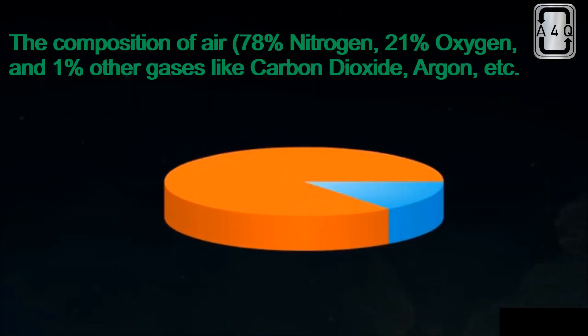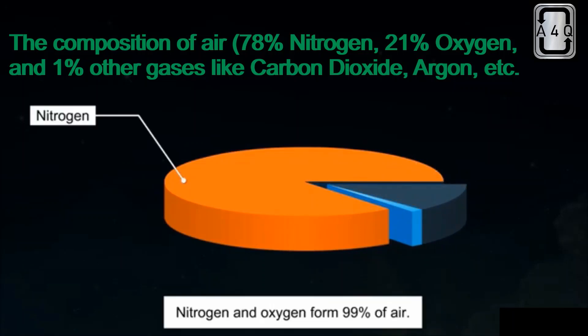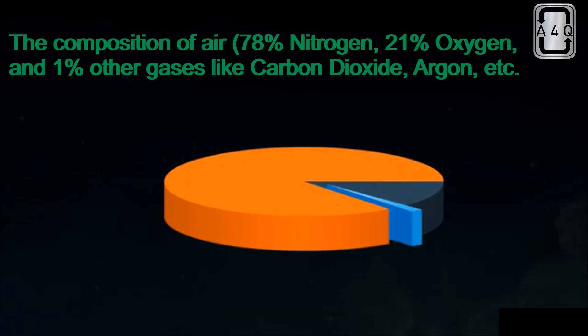78% nitrogen, 21% oxygen, and 1% other gases like carbon dioxide, argon, etc. This clearly shows that air is mainly comprised of two gases: nitrogen and oxygen.